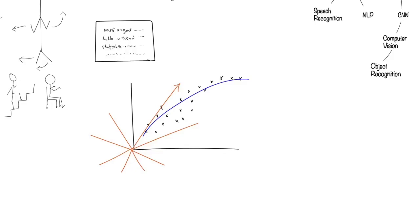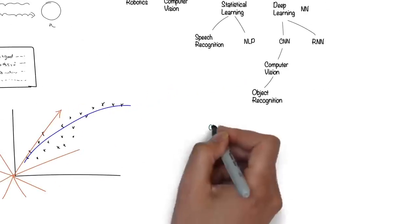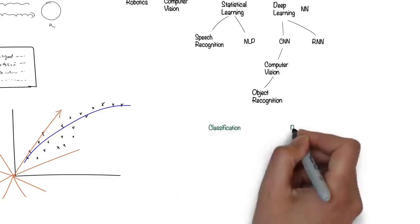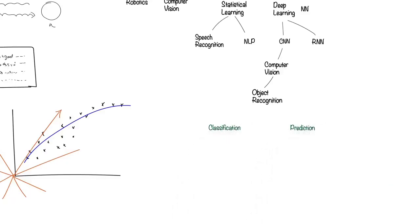Once it learns these patterns, it can make predictions that humans can't even come close to. We can use all these machine learning techniques to do one of two things: classification or prediction.